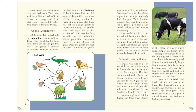A food chain and you. How are you part of a food chain? If you ate a hamburger for lunch, the meat came from a cow that ate grass. The food chain started with plants, and the energy passed on to the cow and then to you. A glass of milk follows the same route. If you ate a piece of fish for dinner, the food chain started in the ocean or a river where microscopic producers like phytoplankton or algae grew.